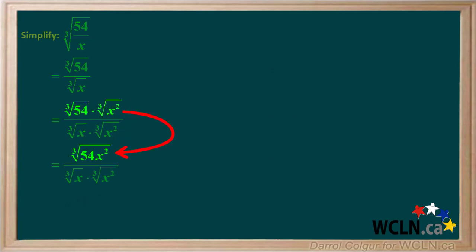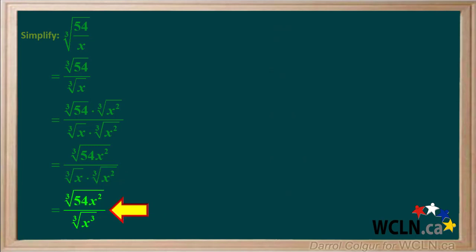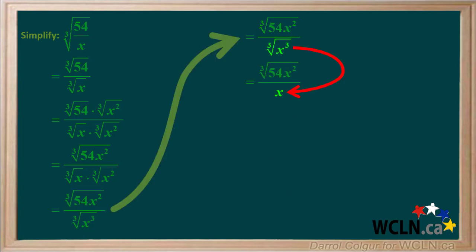Looking at the numerator, the cube root of 54 times the cube root of x squared is equal to the cube root of 54x squared. And looking at the denominator, the cube root of x times the cube root of x squared is equal to the cube root of x cubed. The cube root of x cubed is equal to x, so we're left with the cube root of 54x squared over x.